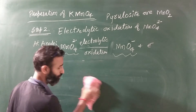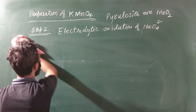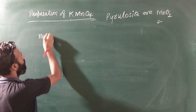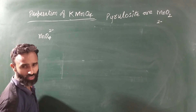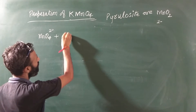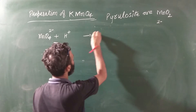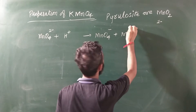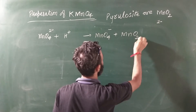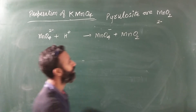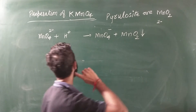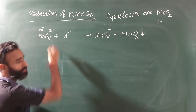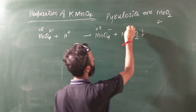This electrolytic method is the most important. In addition, MnO4 2 negative undergoes disproportionation in acidic or neutral solution. We get MnO4 negative and MnO2. The oxidation numbers are plus 6, plus 7, and plus 4.